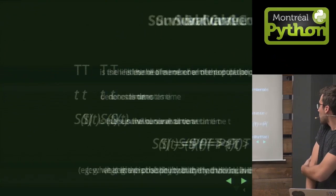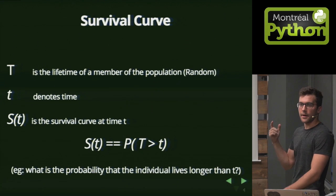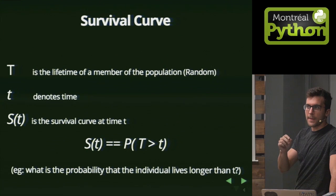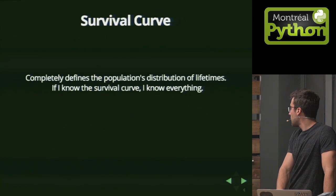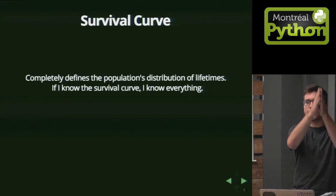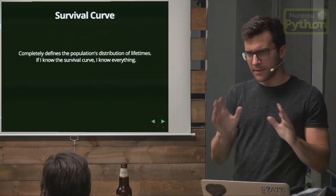The survival curve is defined as follows: T (capital T) is the lifetime of some random individual in the population. Small t denotes time — 0, 1, 2, 3, up to whatever. S(t) is the survival curve at time t, defined as the probability that the individual lives longer than lowercase t. If I know the survival curve, I know everything about the population: how long they live on average, the median life expectancy, the most likely time of death, the maximum they could live for — statistically, of course.